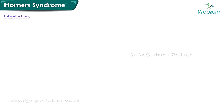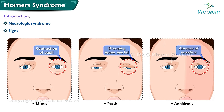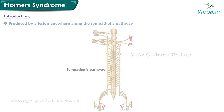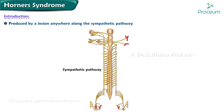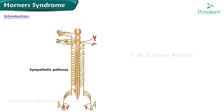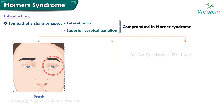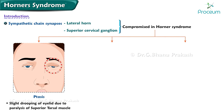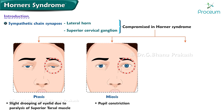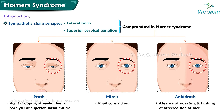Horner syndrome is a classic neurologic syndrome whose signs include miosis, ptosis, and anhydrosis. Horner syndrome can be produced by a lesion anywhere along the sympathetic pathway that supplies the head, eye, and neck. Sympathetic chain synapses that may be compromised include the lateral horn and the superior cervical ganglion. Signs include ptosis — slight drooping of the eyelid due to paralysis of the superior tarsal muscle — miosis, and anhydrosis.